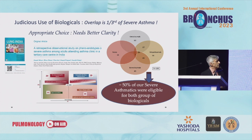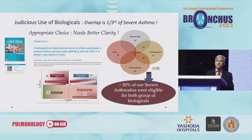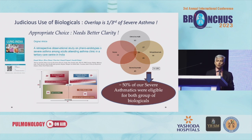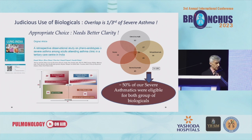The other aspect of this study: 85% of severe asthma patients are eligible for biologicals, and 50% of them are eligible for more than two biologicals. In India it is very important — and I repeatedly say this — choose your biological very judiciously. That is the most important step on the day you decide to start a biological in a patient.